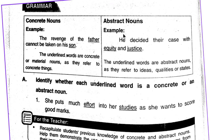Abstract Nouns are those nouns which refer to ideas, qualities, or states. You cannot see them. For example, justice, love.